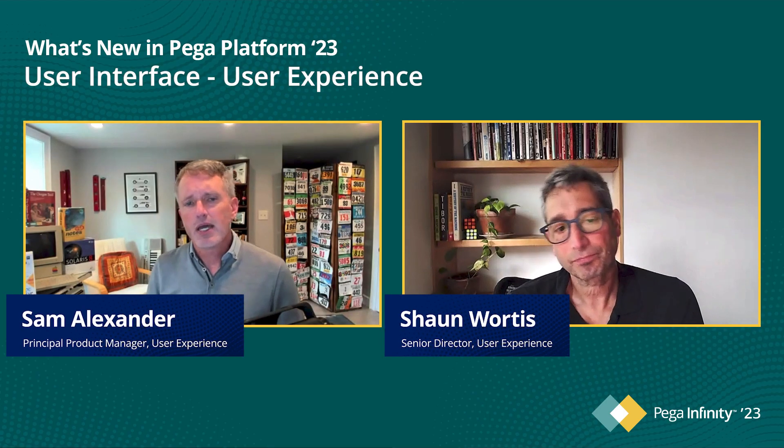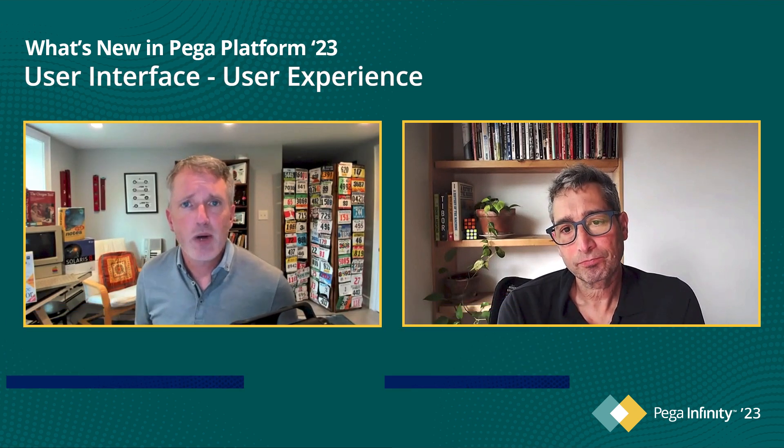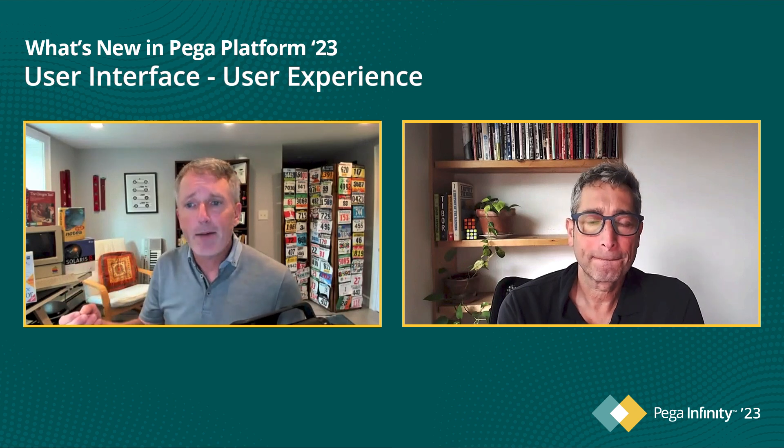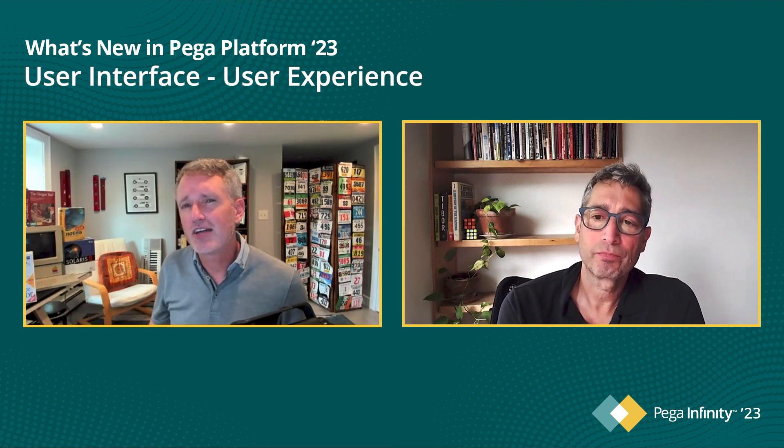Before we talk about Constellation UX and Infinity 23, let's recap what Constellation UX is for listeners who may be unfamiliar. Constellation UX is the name of Pega's latest UI architecture, UI technology, and out-of-the-box design system for Pega Infinity. Many customers across multiple industries are now using it. It's mature and has what we call outcome parity with previous technologies, meaning the feature set delivers the same business outcomes as our traditional section-based UI.